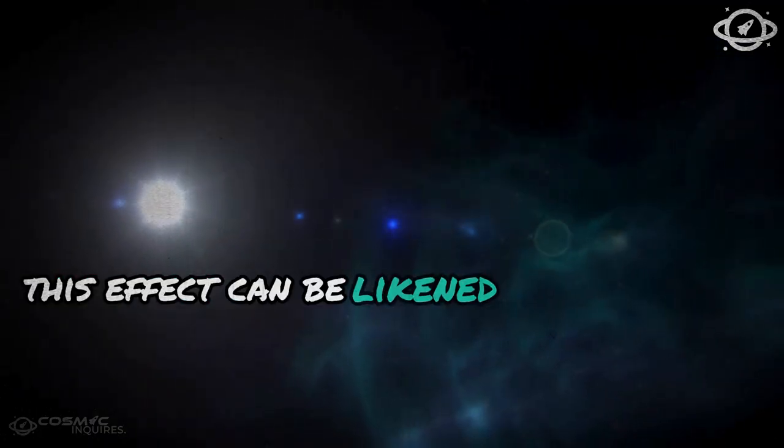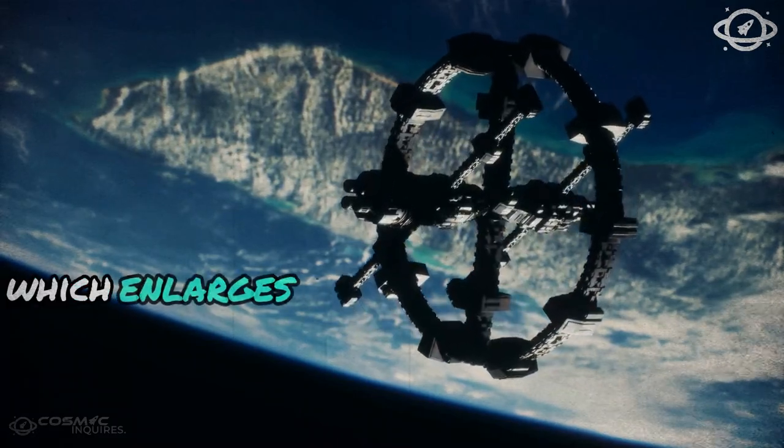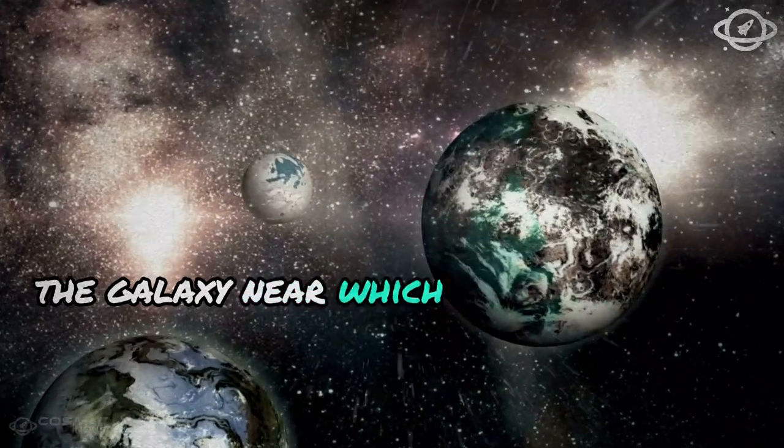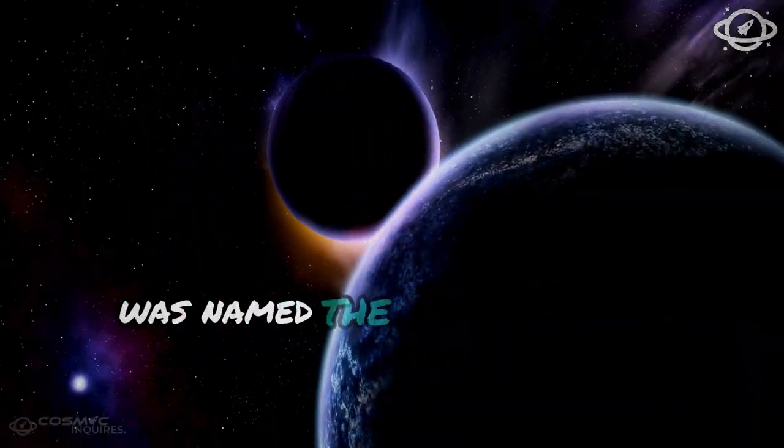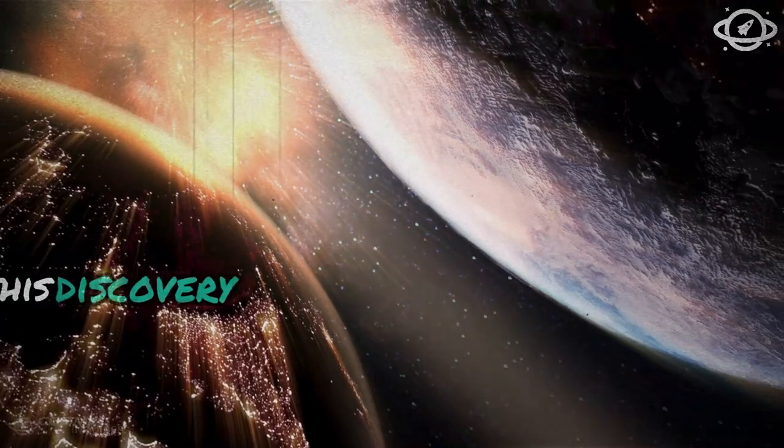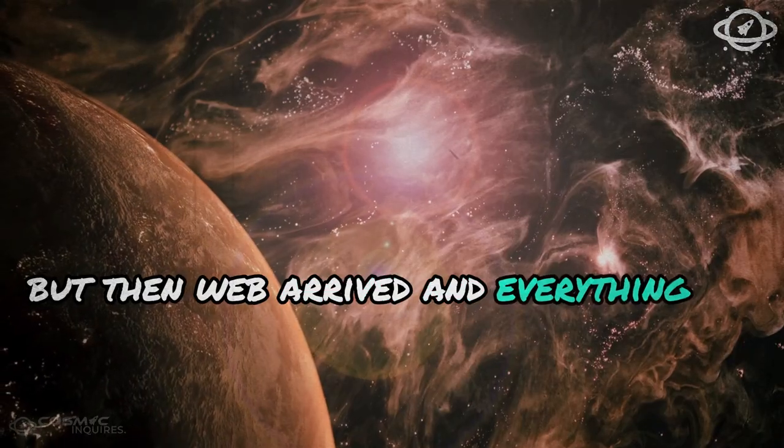This effect can be likened to using a curved magnifying glass over a map, which enlarges certain sections while distorting others. The galaxy near which Earendel was discovered was named the Sunrise Arc. At the time, researchers believed this discovery brought them close to the cosmic dawn, but then Webb arrived, and everything changed.